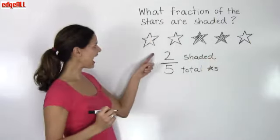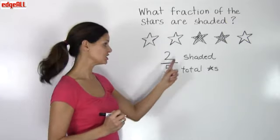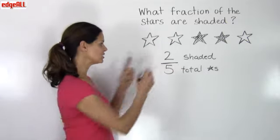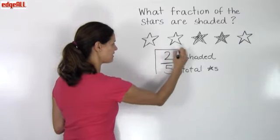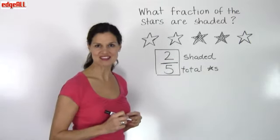So the fraction of the stars that are shaded is two over five, or two fifths.